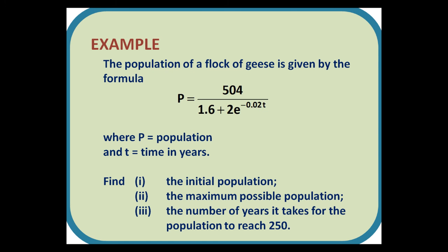Example: The population of a flock of geese is given by the formula P = 504/(1.6 + 2e^(-0.02t)), where P is the population and t is the time in years. Find: 1, the initial population; 2, the maximum possible population; 3, the number of years it takes for the population to reach 250.